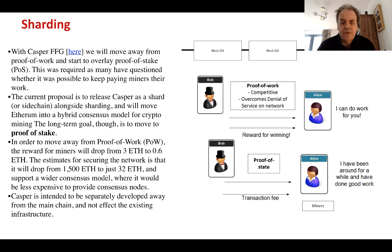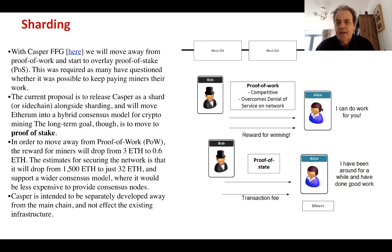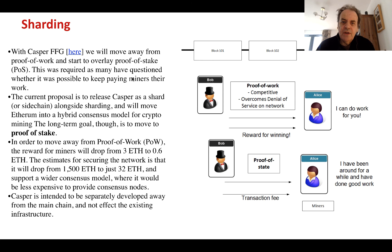The other method proposed is Casper, which moves away from proof of work. Proof of work is a competitive infrastructure where miners must compete for work — it overcomes denial of service on the network so that no one node can take over, but it requires costly work. Proof of stake moves away from that and towards nodes which are well defined for creating good work and delivering it on time, resulting in a transaction fee for the miners. Initially Casper will overlay proof of work with proof of stake so that we can migrate away from proof of work and eventually move towards a proof of stake model.